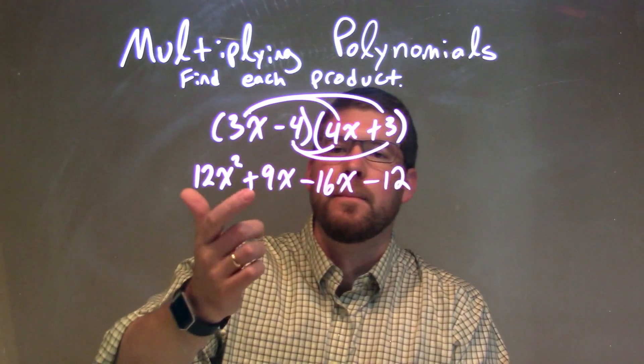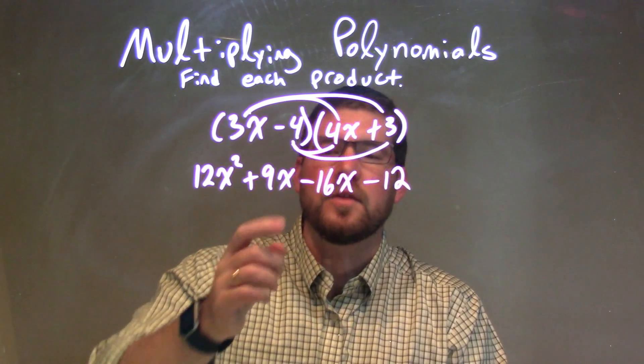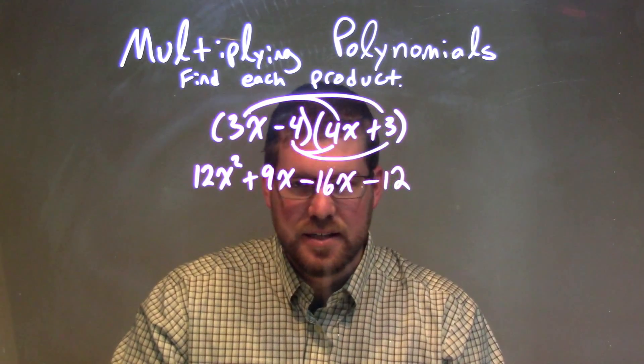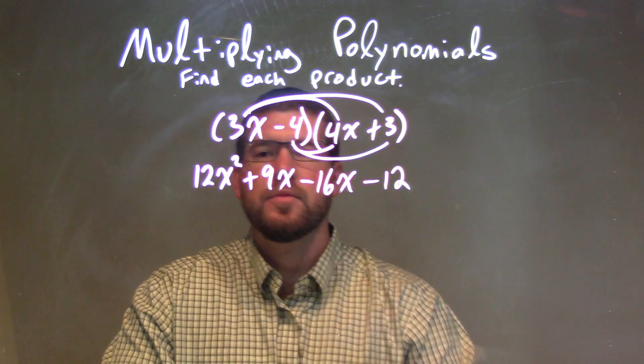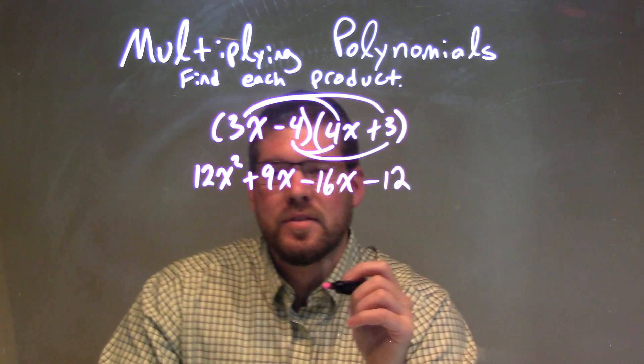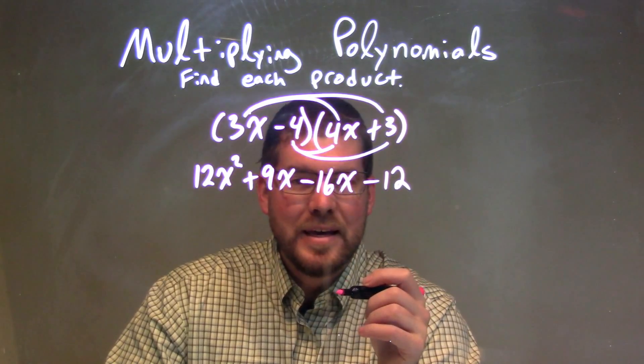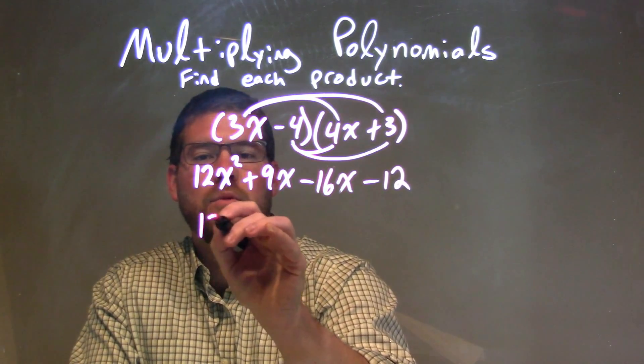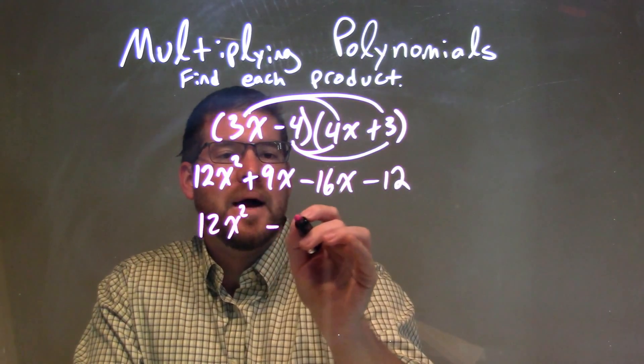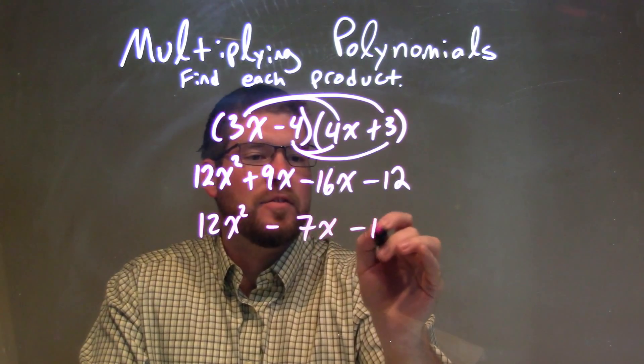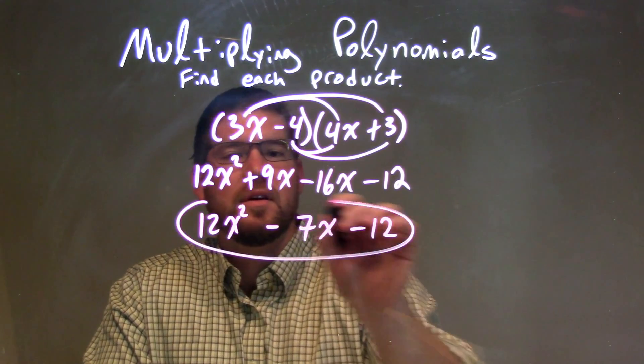At this point now, we need to combine our like terms. The only like terms I see are the 9x and the minus 16x. So we combine those like terms, and 9x minus 16x comes out to be minus 7x. So we have 12x squared minus 7x minus 12, and that is our final answer.